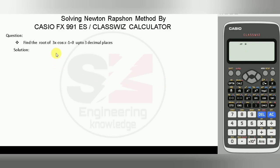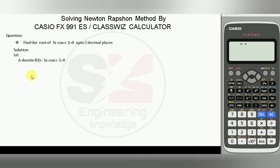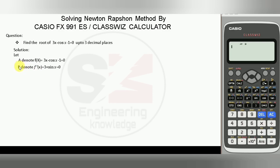Now we have to set up this equation. We denote this equation as the function f(x), which is represented by the variable A in the calculator. Similarly, the derivative of this function — that is f'(x) — will be 3 plus sin x, and this function will be denoted by the variable B in the calculator.